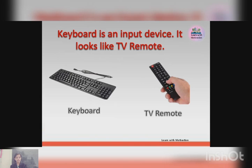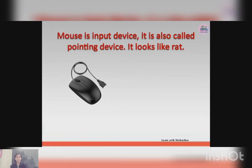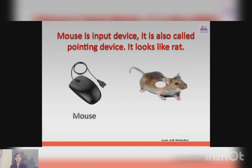Next is mouse. Mouse is an input device. It is also called a pointing device. It looks like a real mouse — it has a long tail, just like a mouse has a long wire.